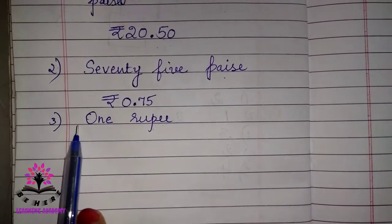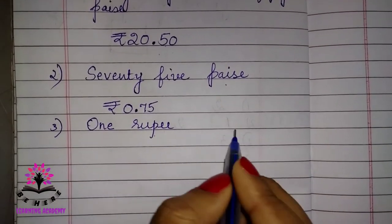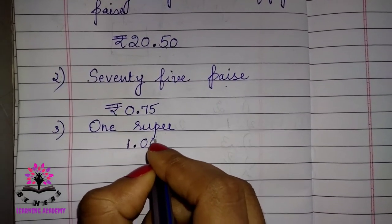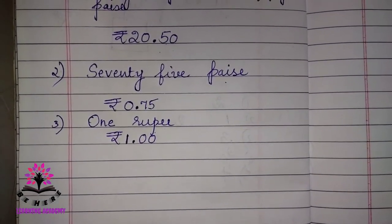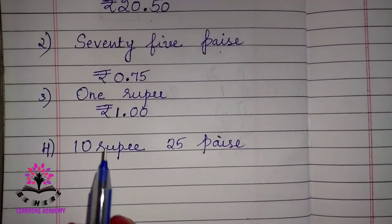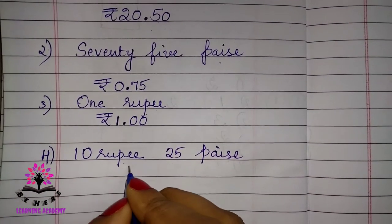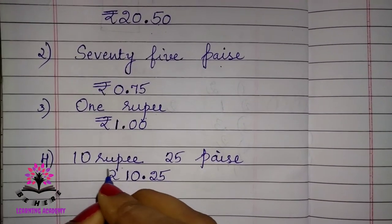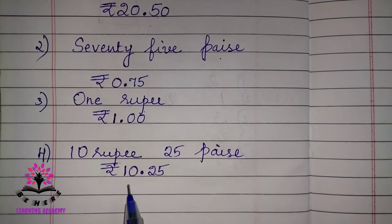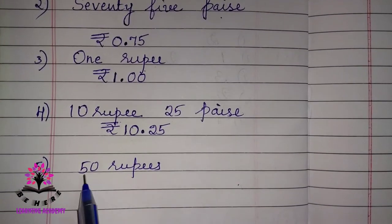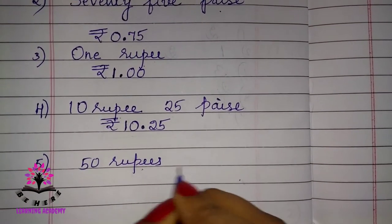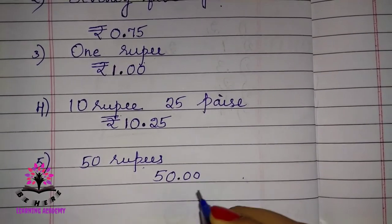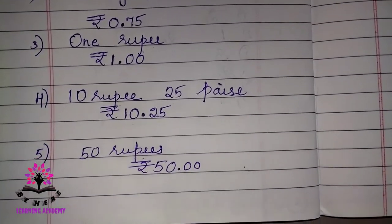For 1 rupee with no paisa: write 1, dot, 00 — ₹1.00. For 10 rupees 25 paisa: write 10, dot, 25 — ₹10.25. For 50 rupees with no paisa given: write 50, dot, 00 — ₹50.00.